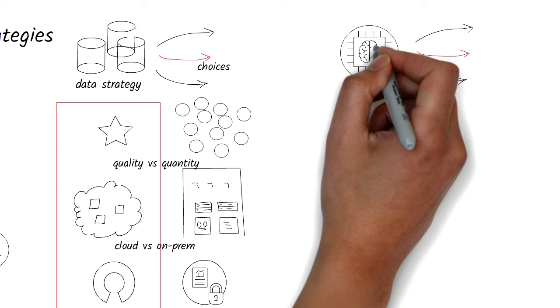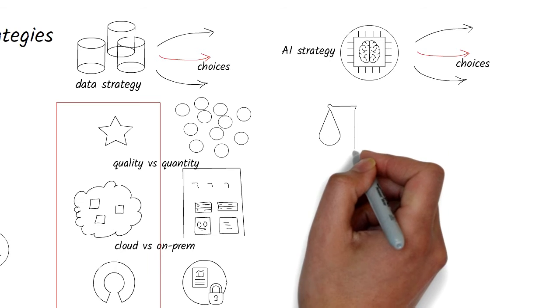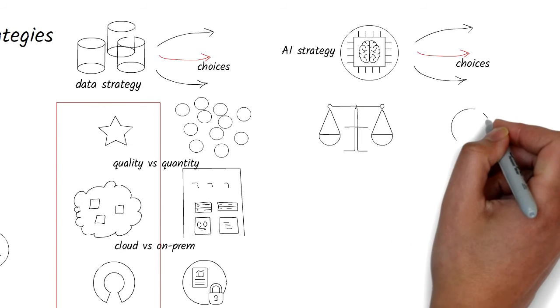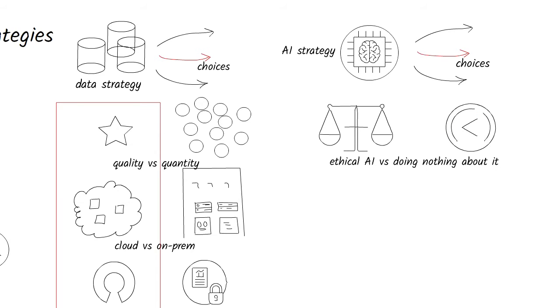Similarly, let's look at the choices we make for AI strategy with some examples. Committing to ethical AI versus de-emphasizing it. Deciding to establish firm guidelines on ethical use of AI, which includes transparency in algorithms, non-bias in data, and fairness in decision-making processes.